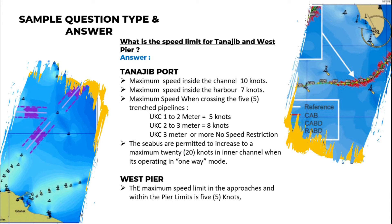CBs are permitted to increase to a maximum of 20 knots in the inner channel when operating in one-way mode. For Westpere, the maximum speed limit in the approach and within the pier is 5 knots.